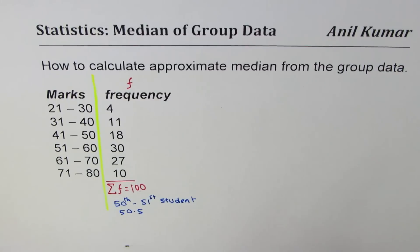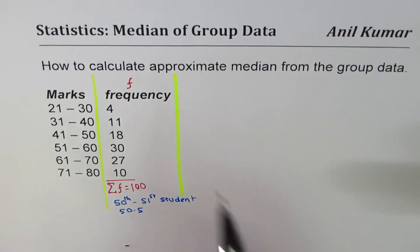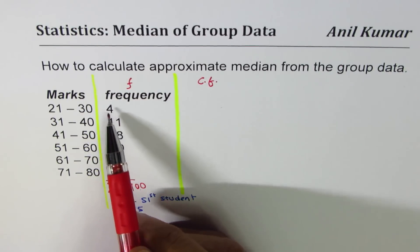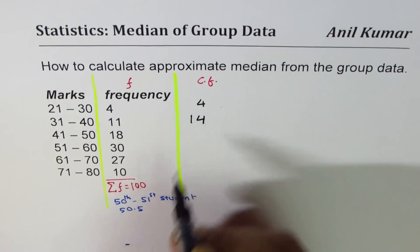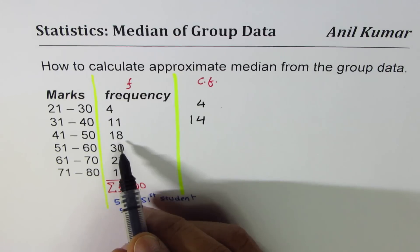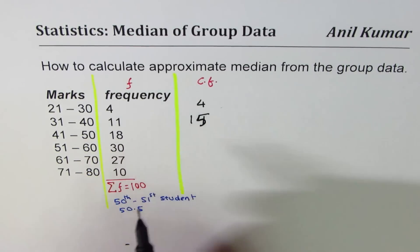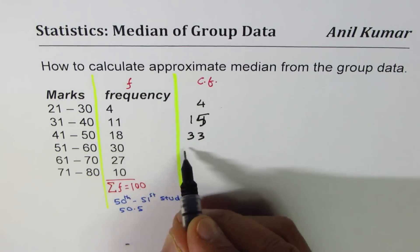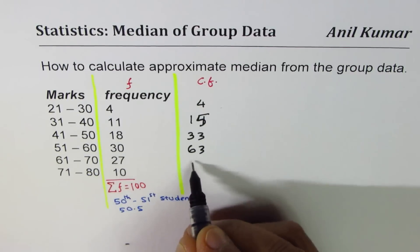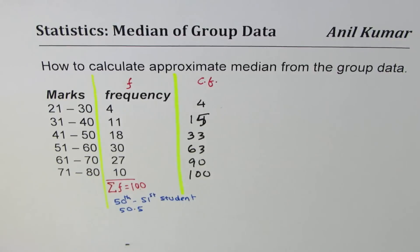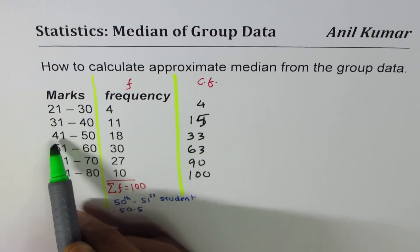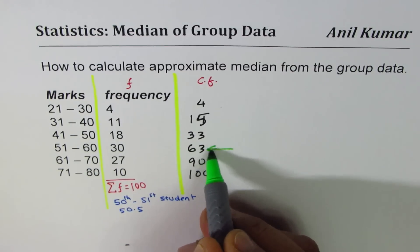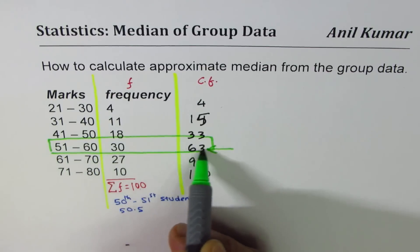Since we have grouped data, we don't know exactly where this person will be. Adding a cumulative frequency column will help. The cumulative frequencies are: 4, then 4+11=15, 15+18=33, 33+30=63, 63+27=90, and 90+10=100. Now, the 50th and 51st persons — where do they lie? Up to 33 students lie in the group up to 41–50, so the 50th person lies in the group 51–60.